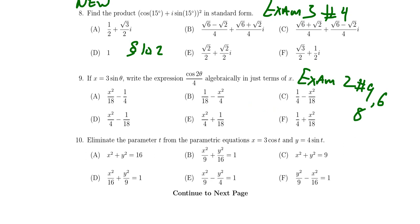Question number ten is a new question about parametric equations from section 11.1. This topic did not appear on any previous exams, so you will be asked a single multiple choice question about parametric equations. Think about what you did in the homework assignments — that should be homework 35 — about parametric equations. You'll be asked a multiple choice question very similar to what you saw in that homework.